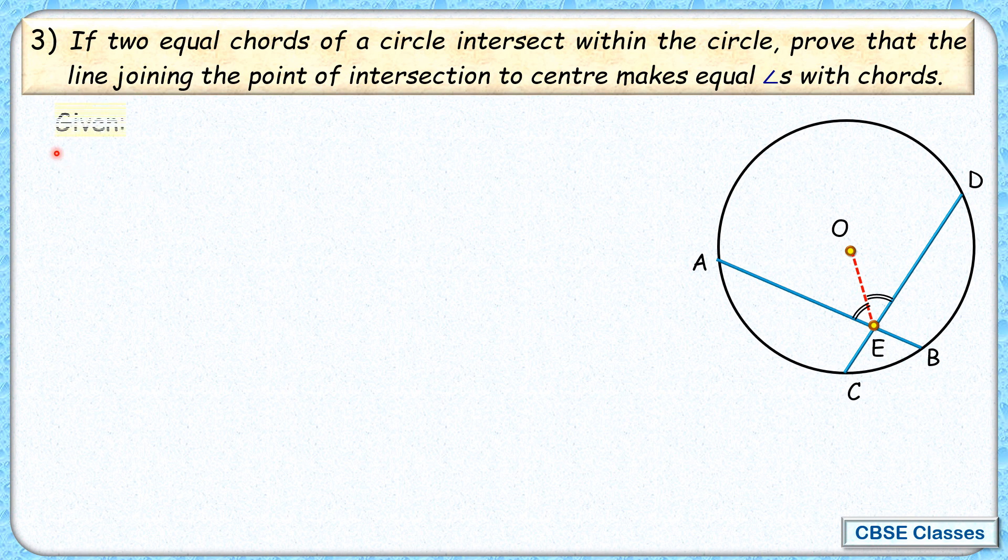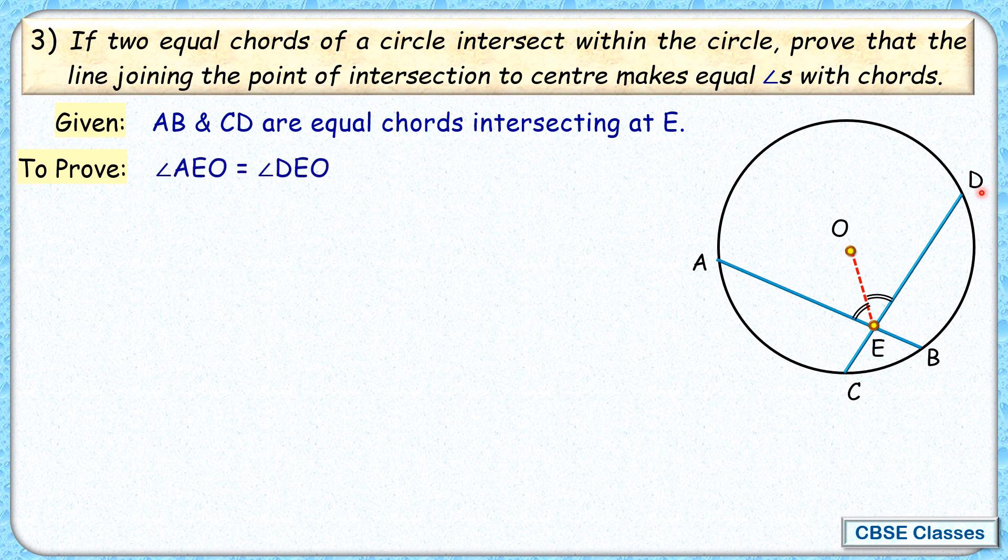We will start with what is given to us. So given to us is chord AB and CD which are equal in a circle and intersecting at point E. And next comes what we have to prove. So here we have to prove that angle AEO is equal to angle DEO. That is these two angles are equal.